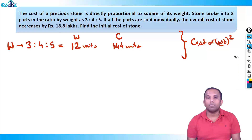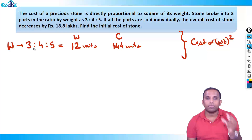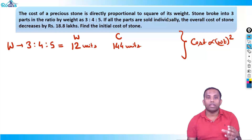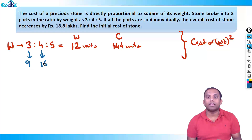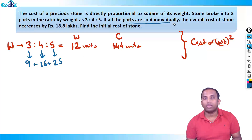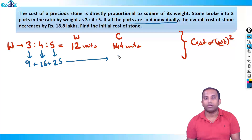Since all three parts can be sold individually — if the weight of a broken part is 3 units, cost is 3² = 9. If weight is 4, cost is 4² = 16. If weight is 5, cost is 5² = 25. So the total cost if all three are sold individually becomes 9+16+25 = 50 units.